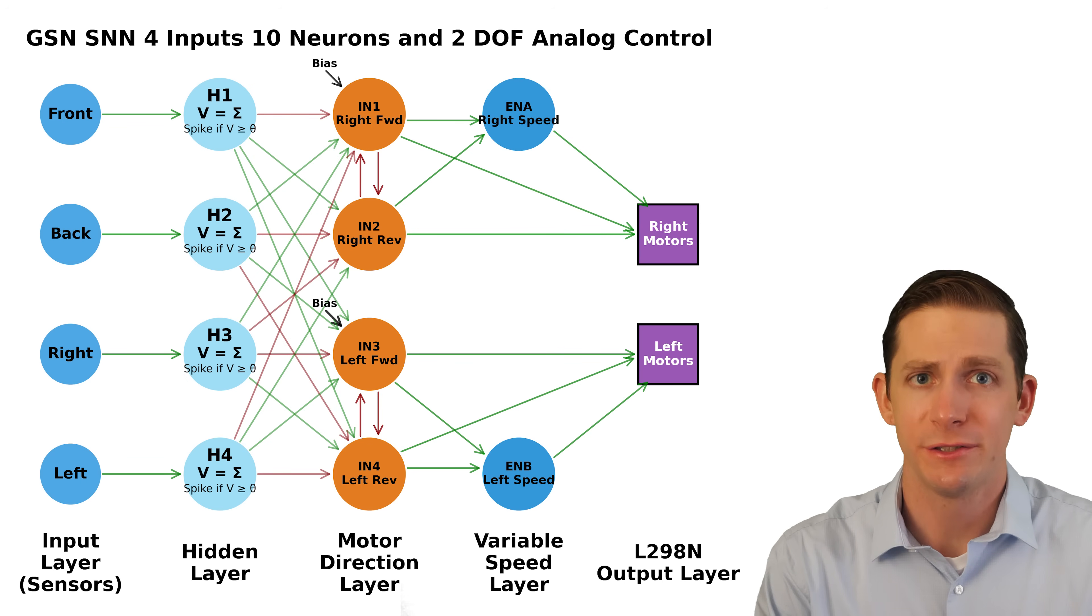The first hidden layer basically modulates based on the input. The motion direction layer firing rate determines whether the motors on the right side of the vehicle should be going in forward or reverse. Also, whether the left side motors should be going in forward or reverse. The variable speed layer then determines how fast the right and left motor should be turning.